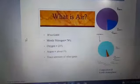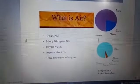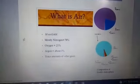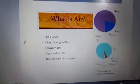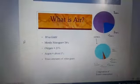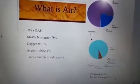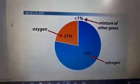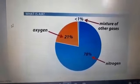Air is a mixture of gases. It mostly contains nitrogen at 78%, then oxygen at 21%, and argon at about 1%, along with traces of other gases. As you can see in this picture, this is the pie chart which shows the mixture of gases in the air.